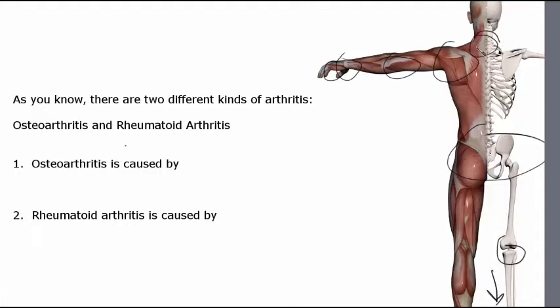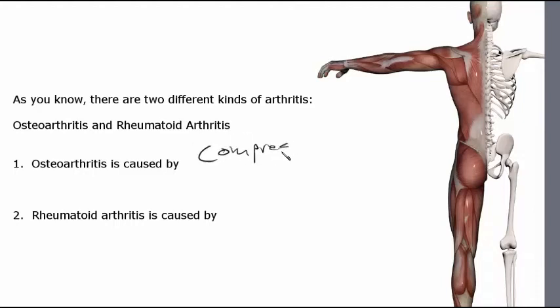Neck. Essentially, if you have a joint, you can have either osteoarthritis and or rheumatoid arthritis. So let me clean those up real quick. Back to what causes osteoarthritis. Osteoarthritis is caused by compression. Compression of the joints.